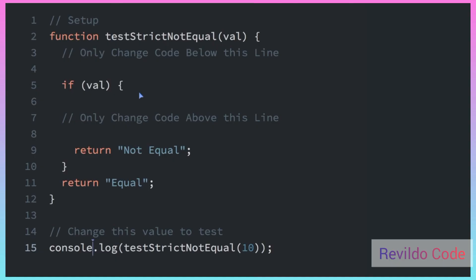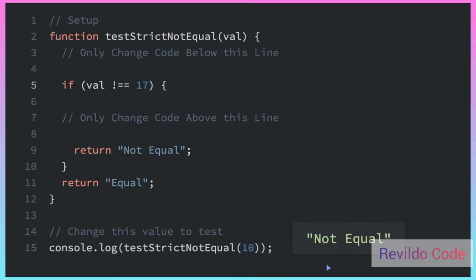The strict inequality operator is basically the opposite of the strict equality operator. So if Val does not equal 17 — this is the strict inequality operator, using !== instead of one equal sign we have two. It checks if something is not true without converting types. For instance, if we check if the number 3 does not equal the string three, that would be true. In this example, we're checking if 10 does not equal 17, and if we run this, we'll see it's not equal.